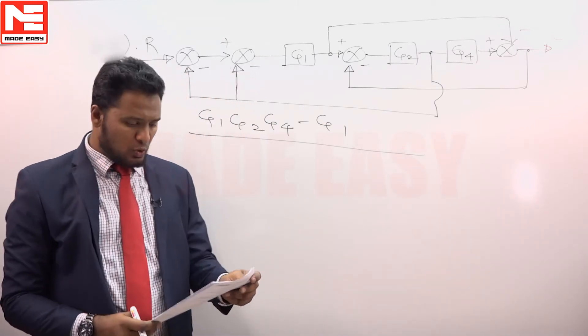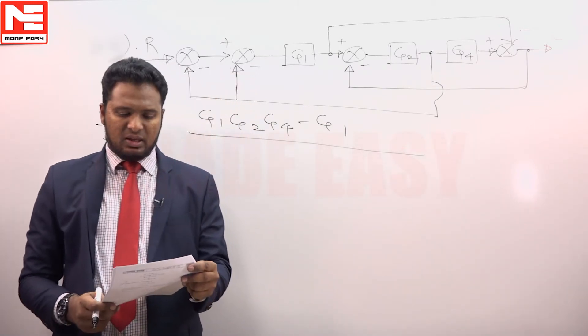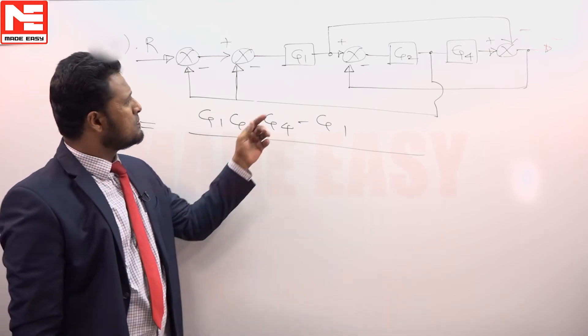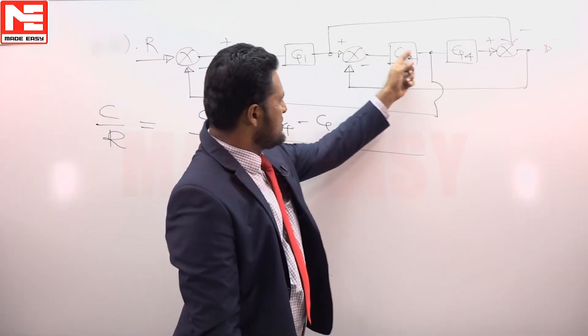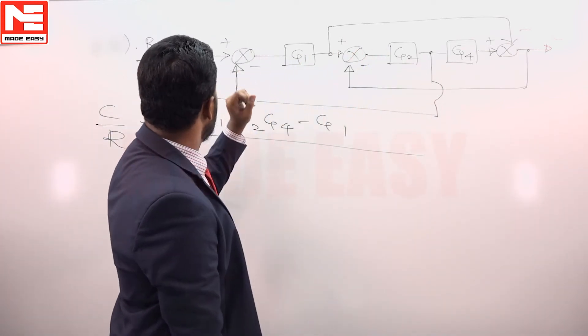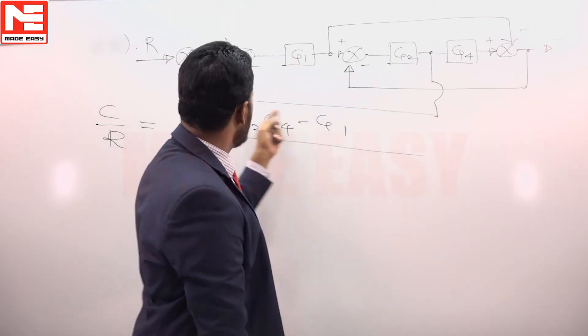There are four more loops of the gain minus G1 G2. Minus G1 G2 is one loop gain. Minus G1 G2 is the other loop gain.